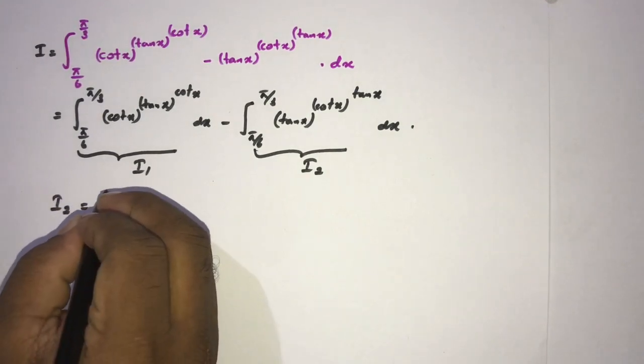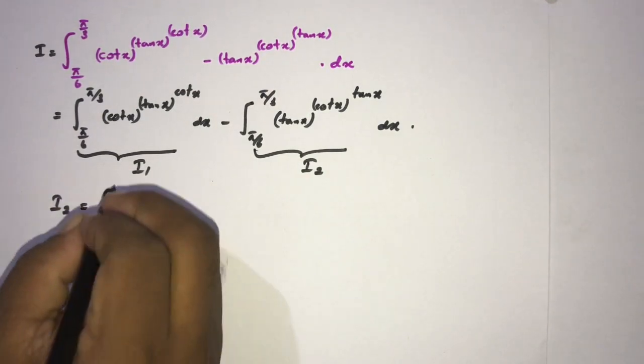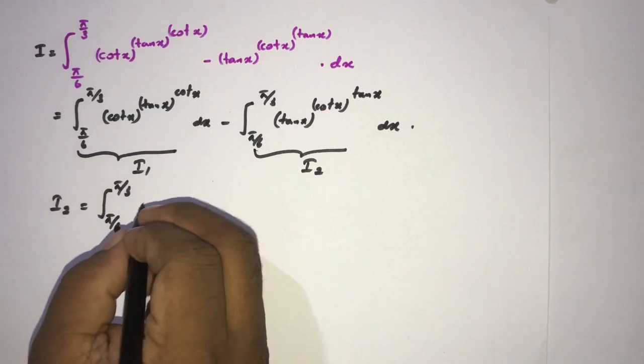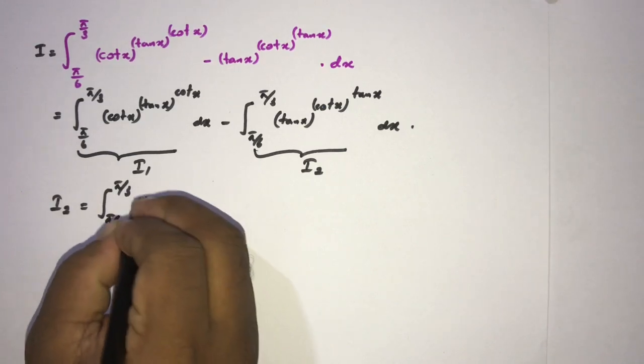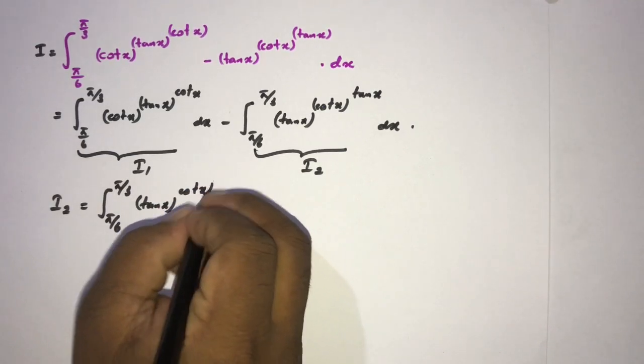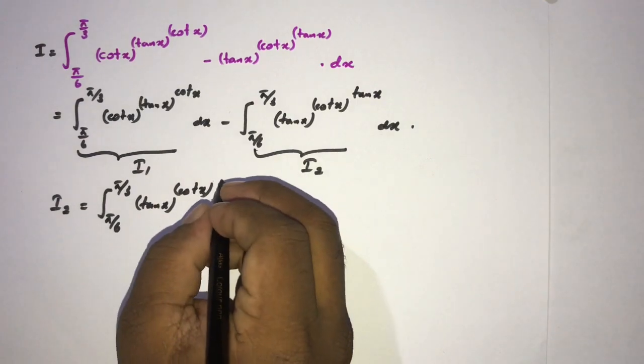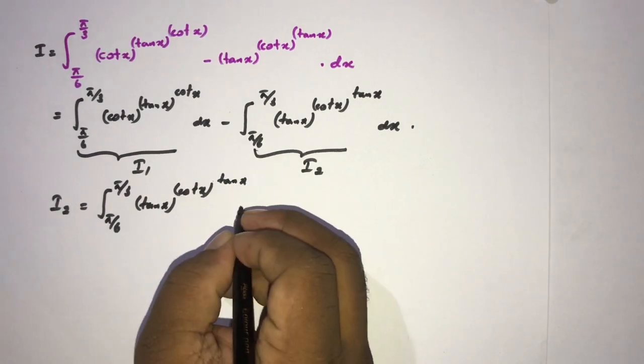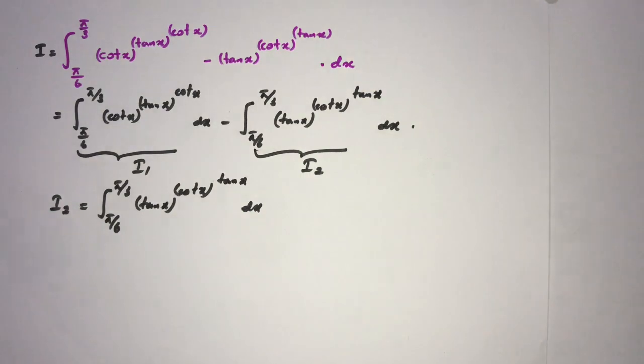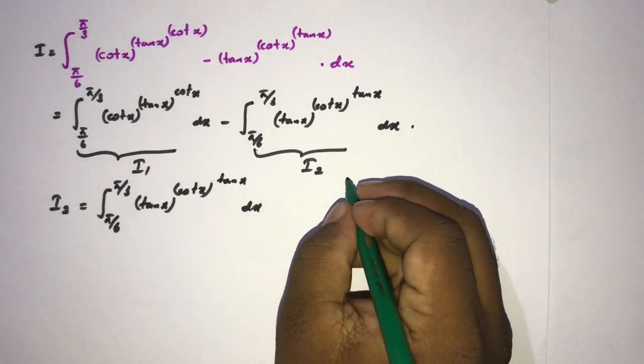Now I am going to take I2. I2, we know, pi over 6 to pi over 3, tan of x raised to the cotangent of x, here tan of x dx. Okay, now I am going to use a king's property.